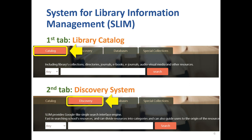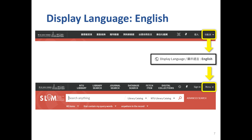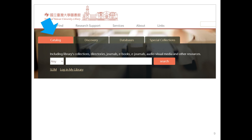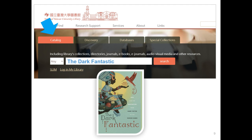When you enter Sling, the language switching option is in the upper right corner. You can switch the display language to English. Let's begin by searching a book. You can click on the first tab, Catalog, and type the book title, author name, or ISBN number in the search bar, then press Enter.